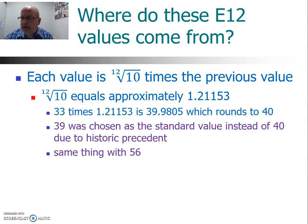However, if you look at 33 multiplied by 1.21153, you get 39.98, which would round to 40. But because of legacy issues, the standard value was chosen as 39 rather than 40. It's not proper rounding, but that's what was used prior to adopting these standards, so they continued to use 39. The same thing occurred with 56 — it's not exactly proper rounding, but it was kept for the same reason.